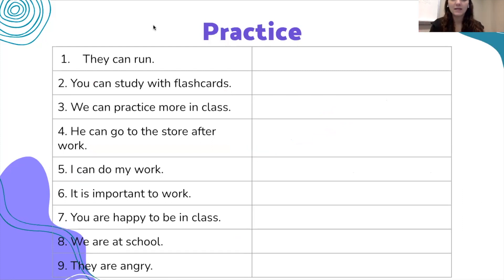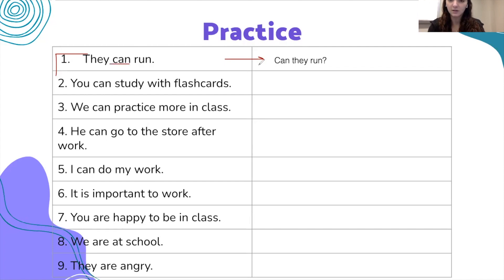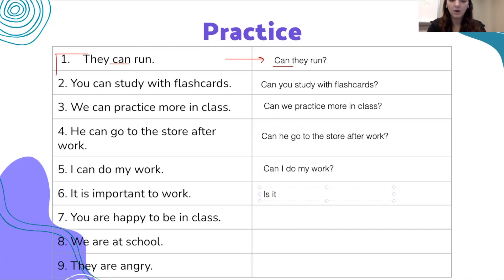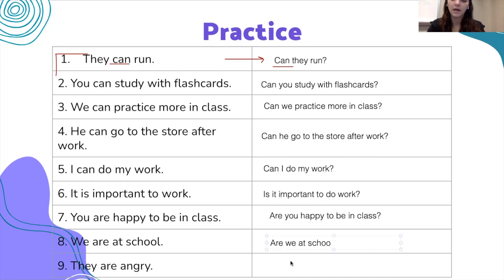Here is some more practice. We take a response and form the question. For example, 'they can run' becomes 'can they run?' — we move the verb to the front. Pause and practice. Number two: 'can you study with flashcards?', 'can we practice more in class?', 'can he go to the store after work?', 'can I do my work?', 'is it important to do work?', 'are you happy to be in class?', 'are we at school?', and 'are they angry?'